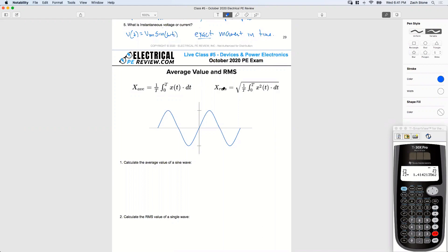Your average value is one over the period times the integral with respect to one period of this function. Your RMS value, root mean square, root as in the square root. Square as in now we're going to square the function before we evaluate it over one period. Times one over the period. Then we're going to take the root of that.